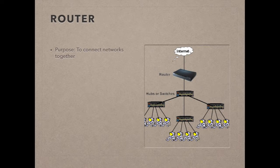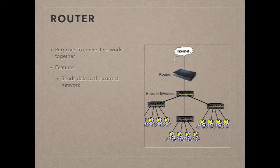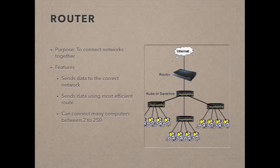A router is able to connect lots of computers and allow them to have access to the internet. Routers also direct data in the most efficient way to the correct network. Routers can connect between 2 and 250 computers, either through a cable or DSL modem. On large-scale networks such as WANs, the router connects various networks and ensures messages are sent on the most efficient path. Wireless routers are very common in the home and act as a wireless access point, and some routers have additional functionality such as printer servers.